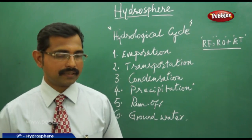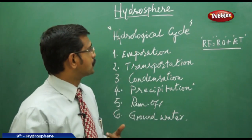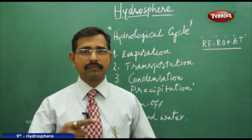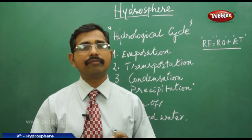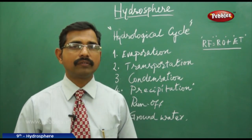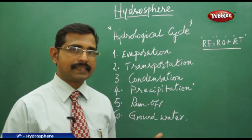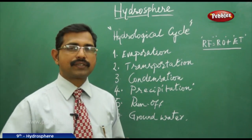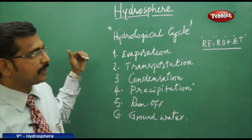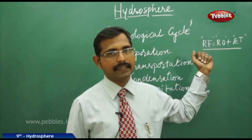Under the hydrosphere, we discuss the hydrological cycle, which is the exchange of water from one phase to another. For example, in oceans water is in liquid phase, water vapor is in gas phase, and ice is in solid phase. This exchange of phases is the hydrological cycle. Mathematically, we express it as: RF = RO + ET.